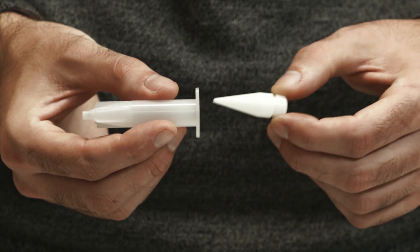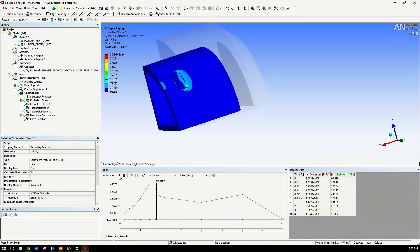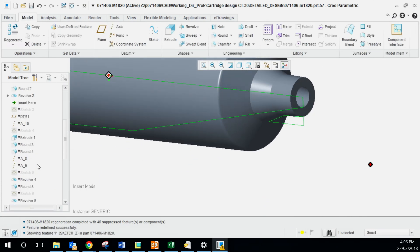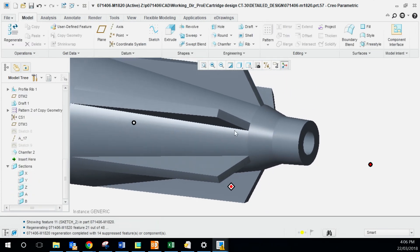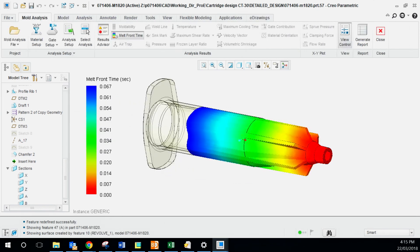The 3D printed prototype confirmed the outside geometry, and then we could move to the formal design process. This part included CADing up the various parts of the cartridge, which included the main body, the two parts of the plunger and the cap. From there we could do some analysis before moving to tool design.